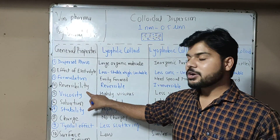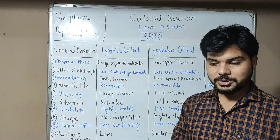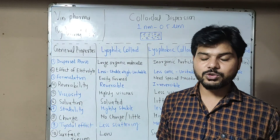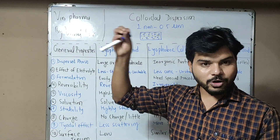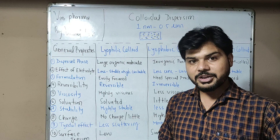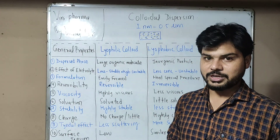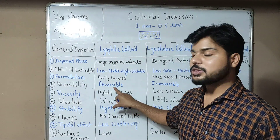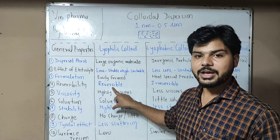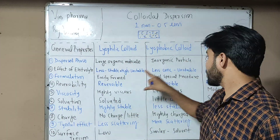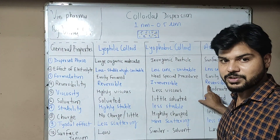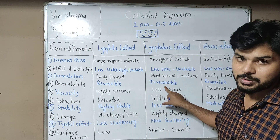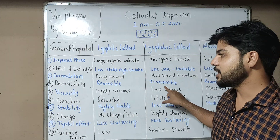Then we talk about reversibility — reversibility means that if we evaporate the solvent and then add the solvent again, lyophilic colloids can be reformulated — they are reversible. Association colloids are also reversible. But lyophobic colloids come in the category of irreversible colloids.